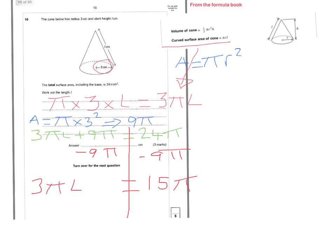Now if we look at the left-hand side, we've got 3 pi L. So if we divide both sides by 3 pi, that is going to leave us with L on its own. And 15 pi divided by 3 pi is going to leave us with 5.